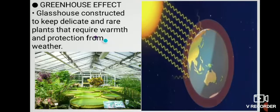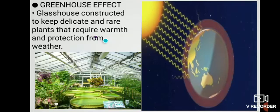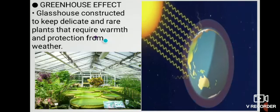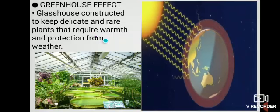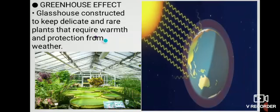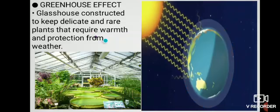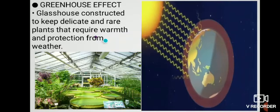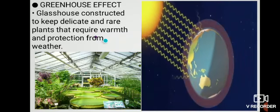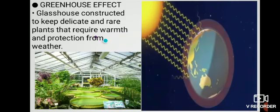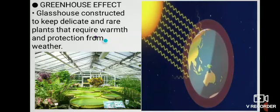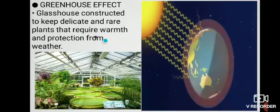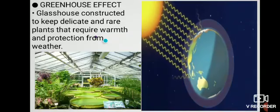Greenhouse gases include water vapor, carbon dioxide, methane, nitrous oxide, ozone, and some artificial chemicals such as chlorofluorocarbons, that is CFCs. A greenhouse is a structure with walls and roof made chiefly of transparent material such as glass, in which plants requiring regulated climatic conditions are grown. Here you can see in this picture also this is greenhouse.